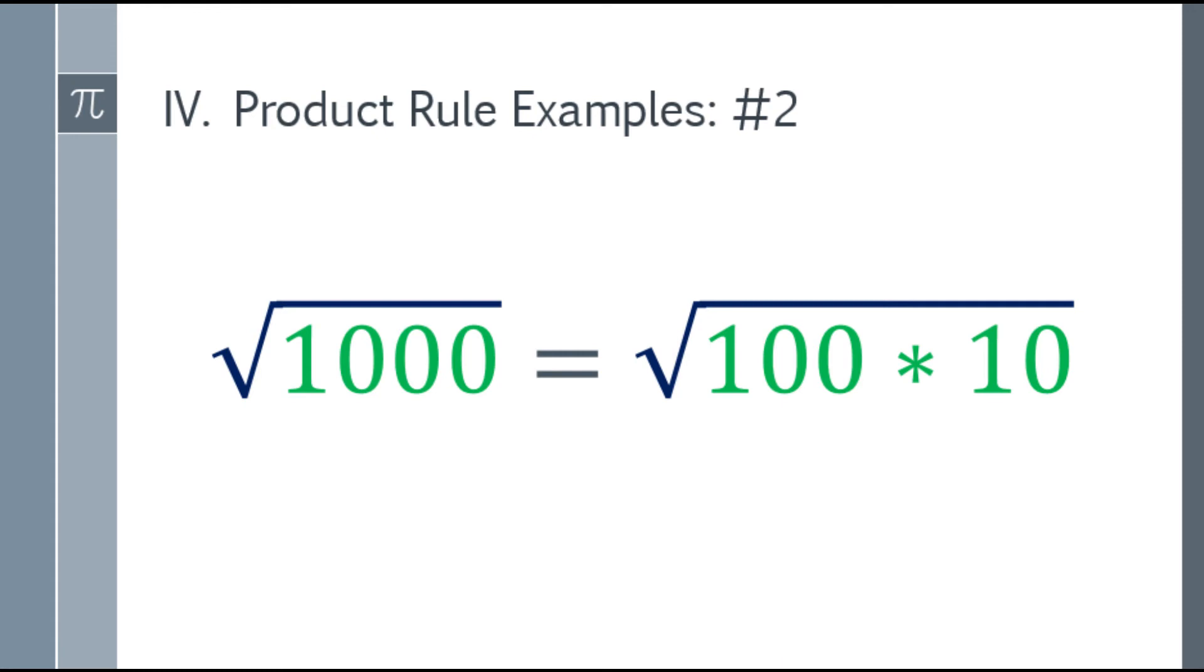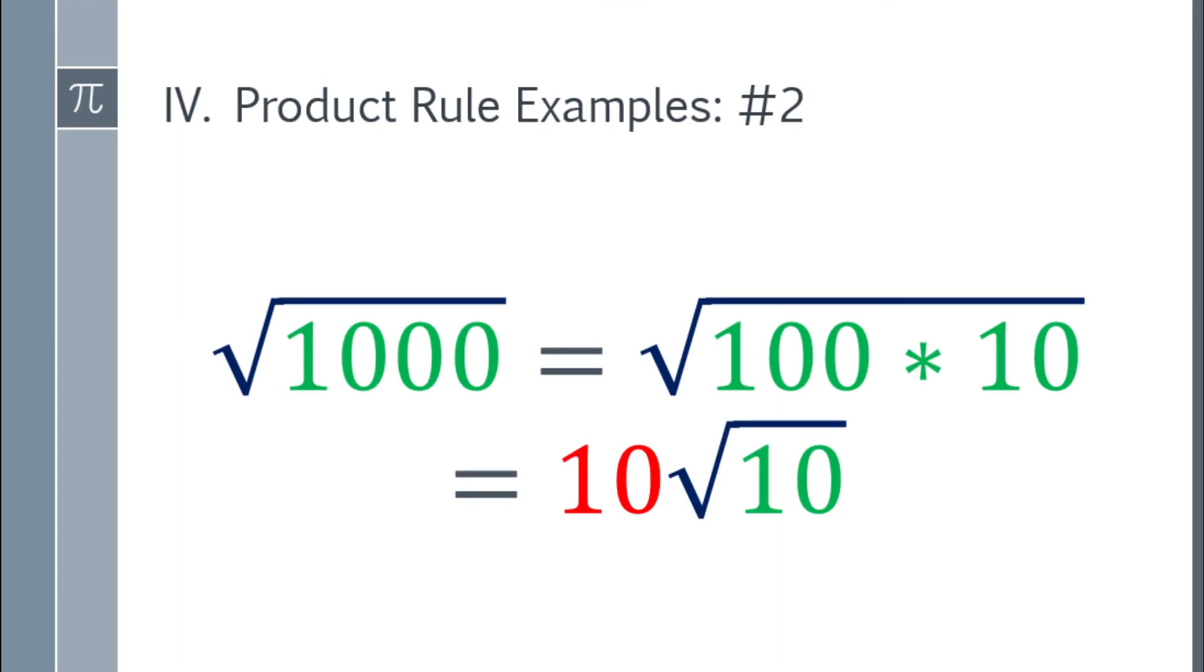So yun na. The square root of 100 times 10. Kung nang may square root ng 100, that will be 10. So lalabas mo siya sa radical sign. Tapos mananatili yung isang 10 sa loob. Yung isang factor ng 1,000.